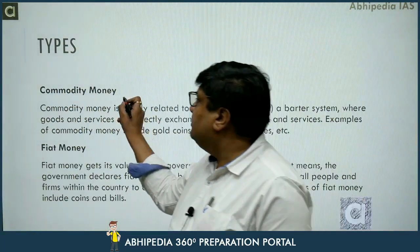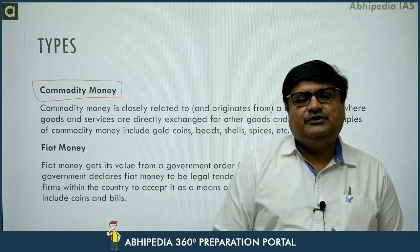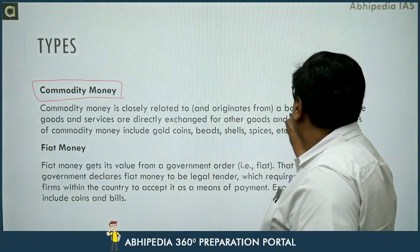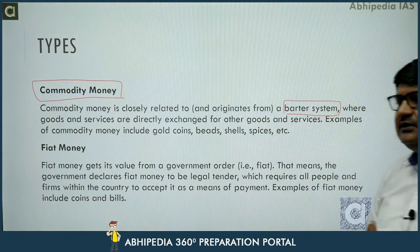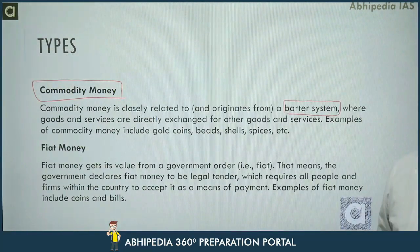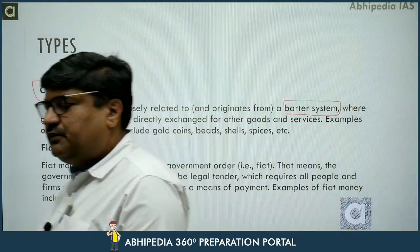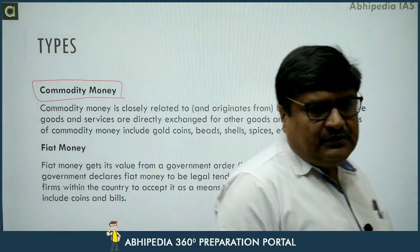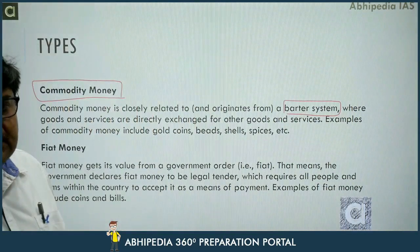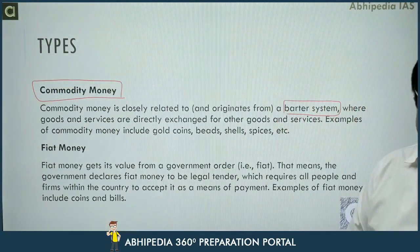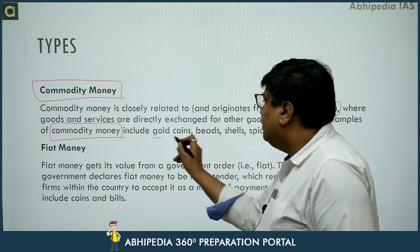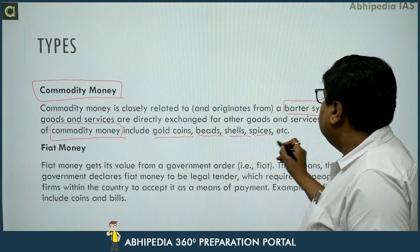The first type is commodity money. It was prevalent during the ancient and medieval period and is associated with the barter system. The barter system is a system of exchange of goods with goods, or goods with services, or services with goods, or services with services — where goods and services are exchanged for other goods and services. But that is difficult, and slowly this barter system was replaced by what we call commodity money. Commodity money includes gold coins, beads, shells, spices, and rice.